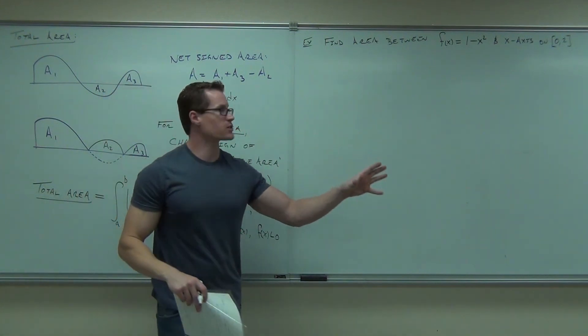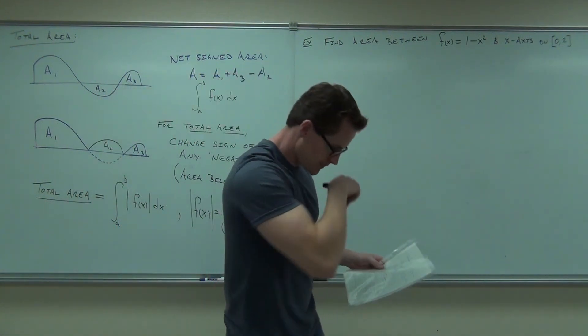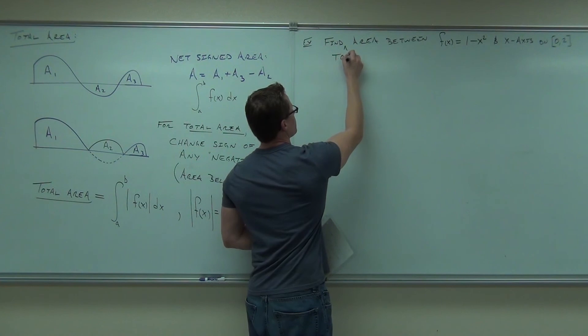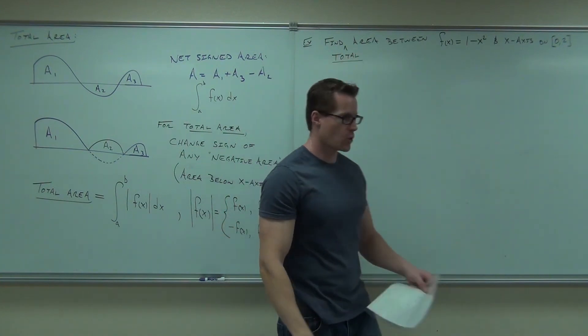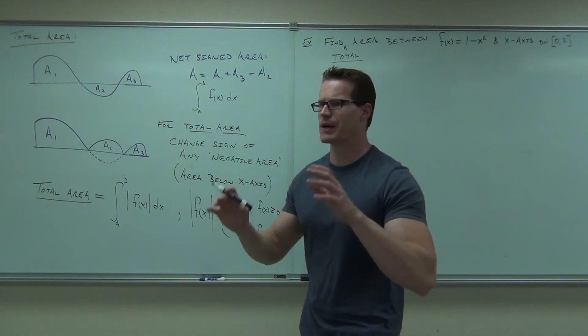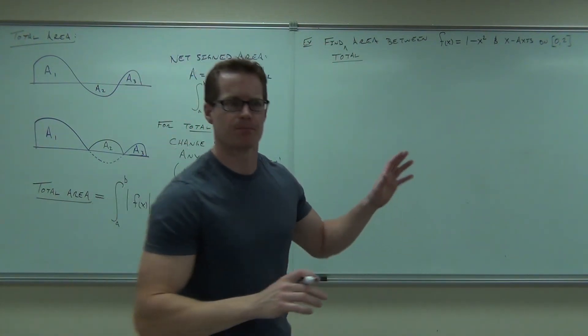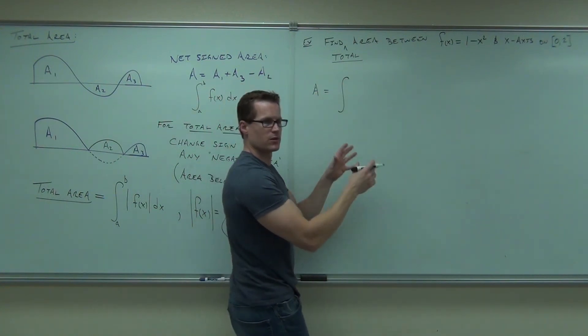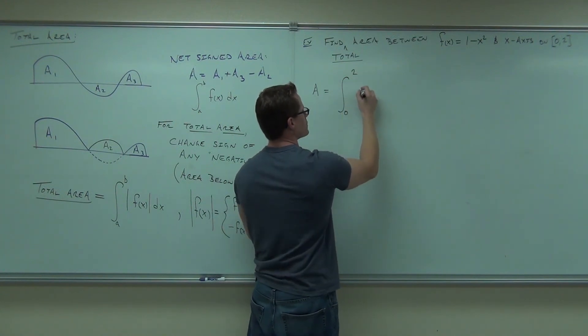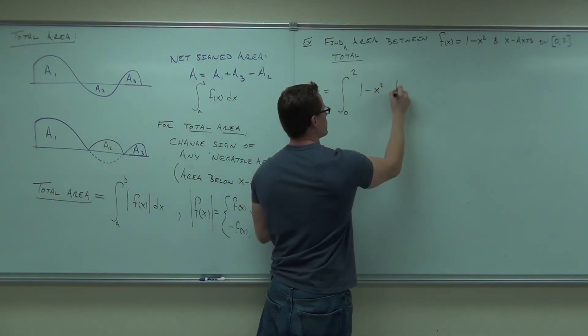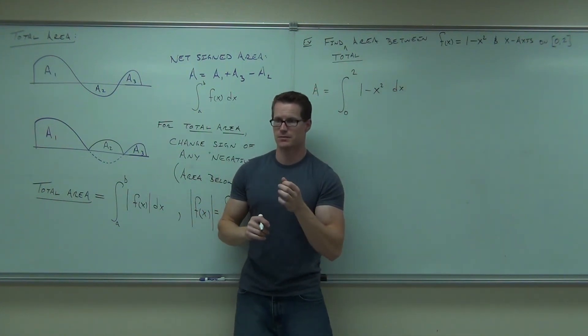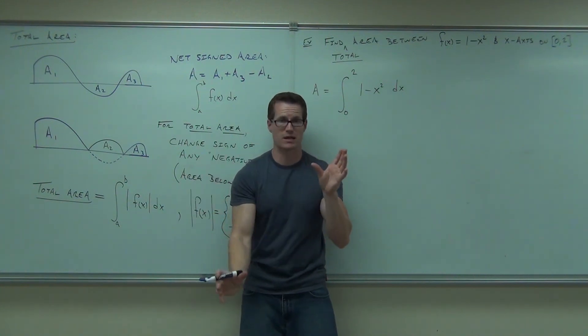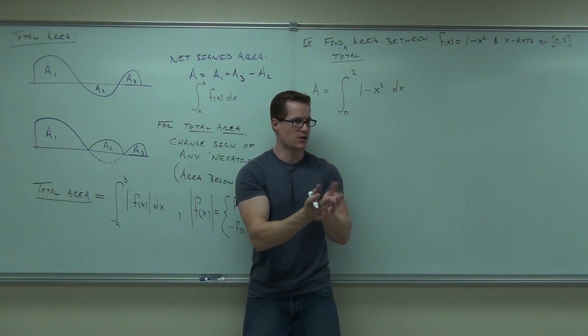Find the area between f of x equals 1 minus x squared and x axis on 0, 2. Well, what we mean is total area. Let me insert that right here. Find total area. Total area between that. Because net signed area would be very easy. Net signed area, you would just take the integral. Look at it. Here would be net signed area. It would be from, where would your integral start, ladies and gentlemen? Where would it end? And your function is 1 minus x squared dx. This right here is net signed area. Do you understand? It would take the area above the x axis, subtract the area below that x axis because it would be negative, and that would be your net gain, your net change in area. Okay, that's what that would be.